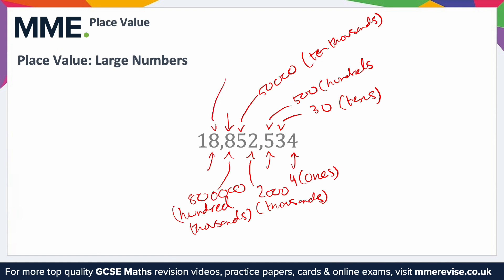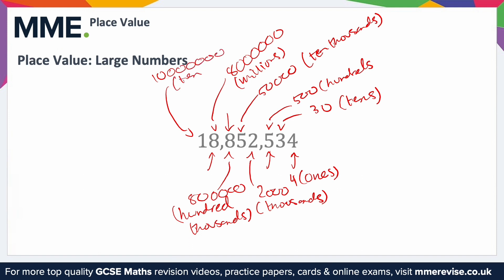The 8 here represents 8,000,000 — that's 8 with 6 zeros — because it's in the millions column. And finally, the 1 represents 10,000,000 — that's 1 with 7 zeros — because it's in the ten millions column.